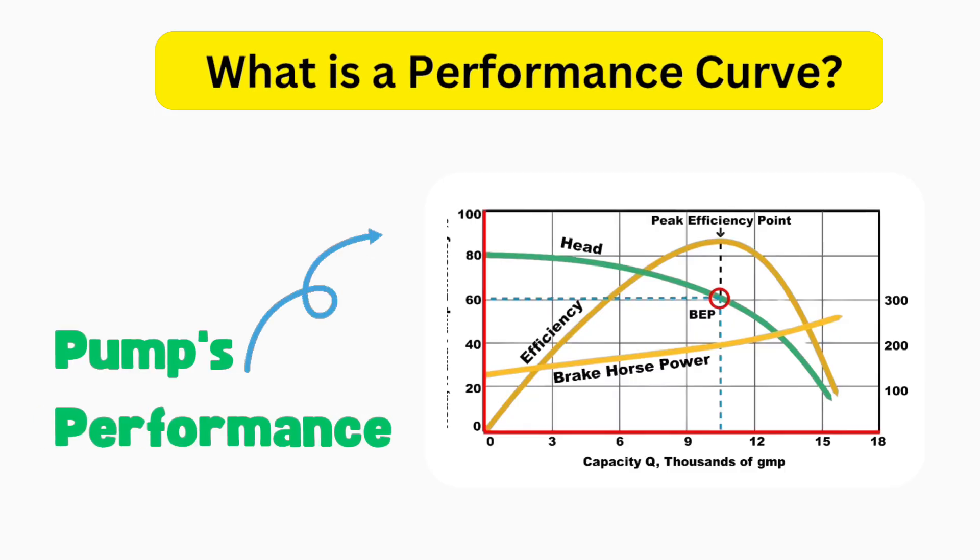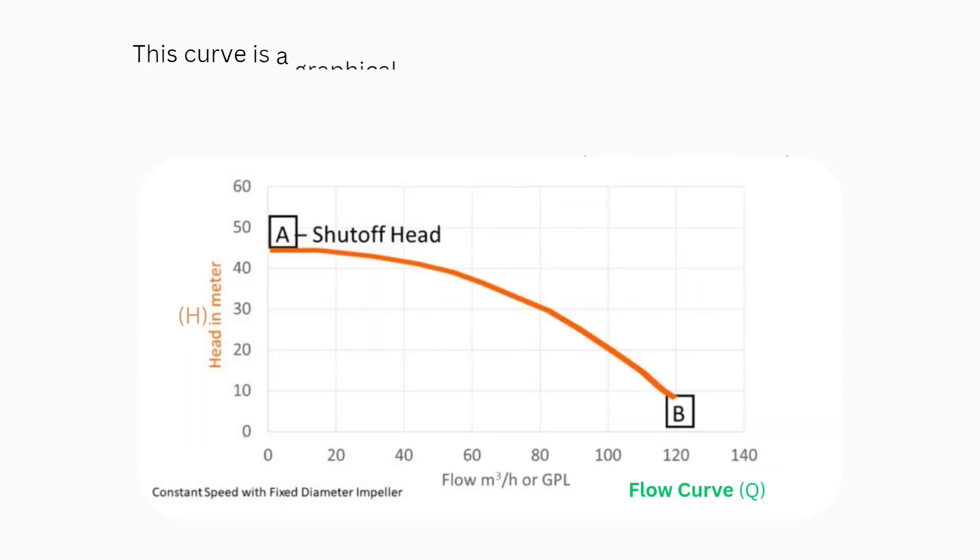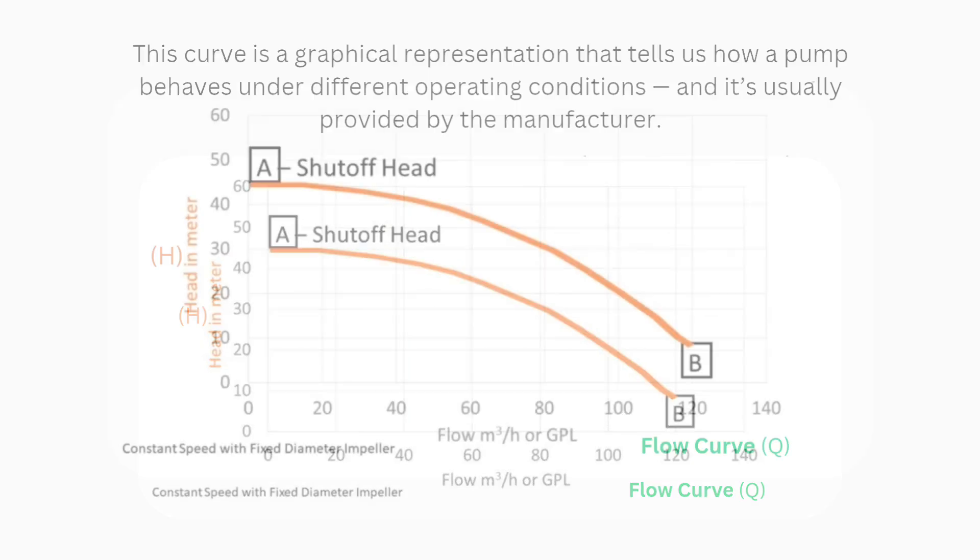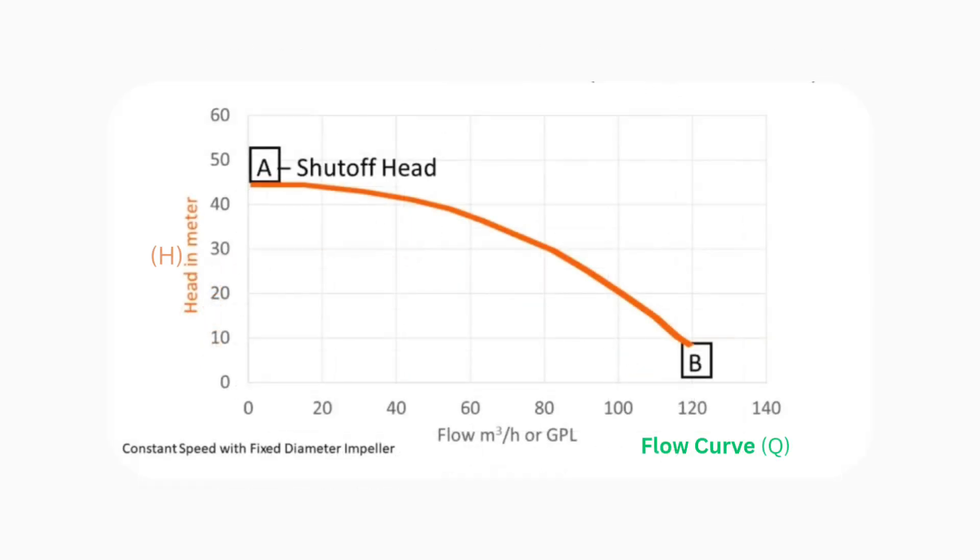What is a performance curve? When we talk about a pump's performance, we are usually referring to its performance curve. This curve is a graphical representation that tells us how a pump behaves under different operating conditions and it's usually provided by the manufacturer. In most cases, performance is plotted with flow rate, denoted as Q, on the x-axis and head, H, on the y-axis. But there's more to the story.